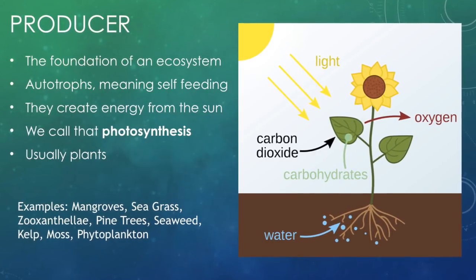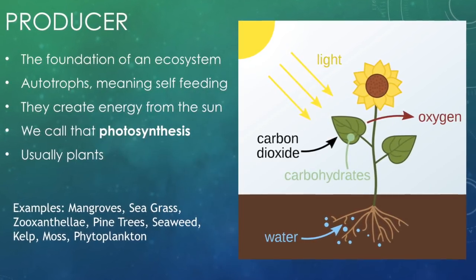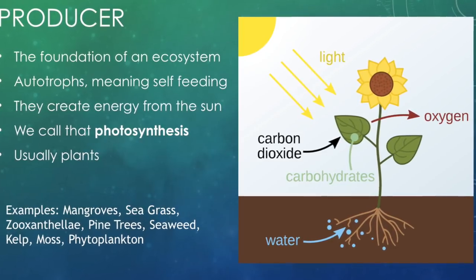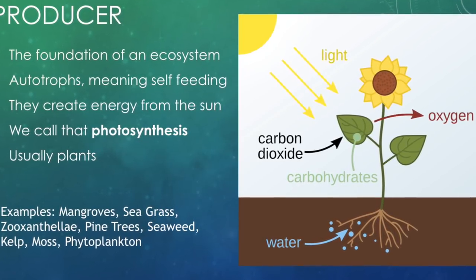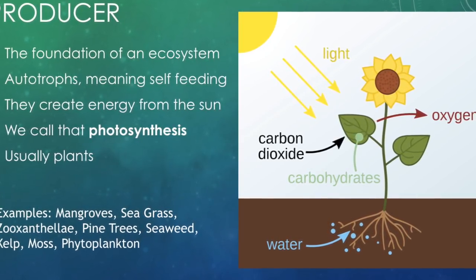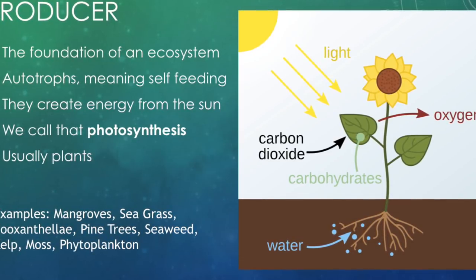Producers are the foundation, and we also call them autotrophs, which means they are self-feeding. Those are going to be your plants — mangroves, seagrass, pine trees, seaweed, phytoplankton — things that make energy from the sun and provide the beginning of that food chain.